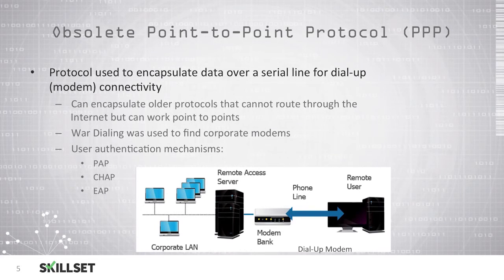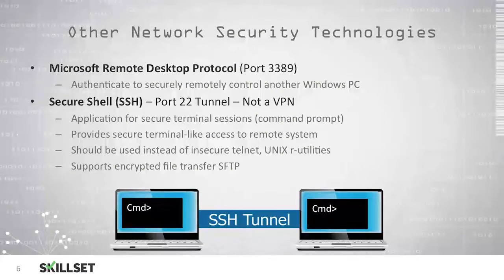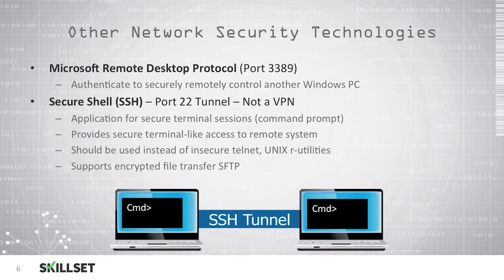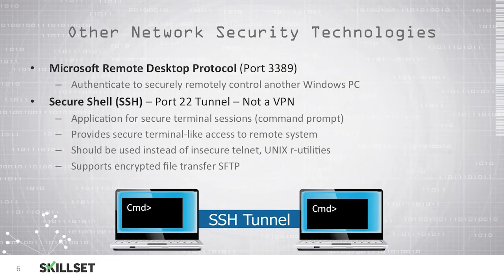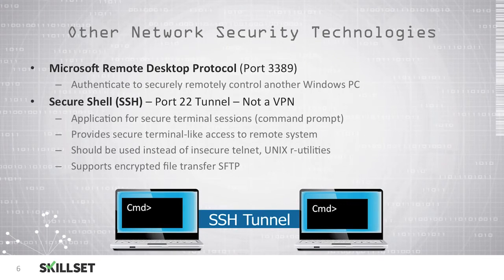There are several different methods to authenticate a user, including PAP, CHAP, and EAP. Microsoft Remote Desktop Protocol (RDP) is another way to remotely connect to and control a Windows PC. RDP commonly uses port 3389 by default, though it is possible to change this port. Secure Shell (SSH) uses port 22 to create a tunnel to remotely control a system, but this is not a VPN connection. SSH provides secure terminal sessions such as a command prompt, and you should not use Telnet or UNIX R utilities.